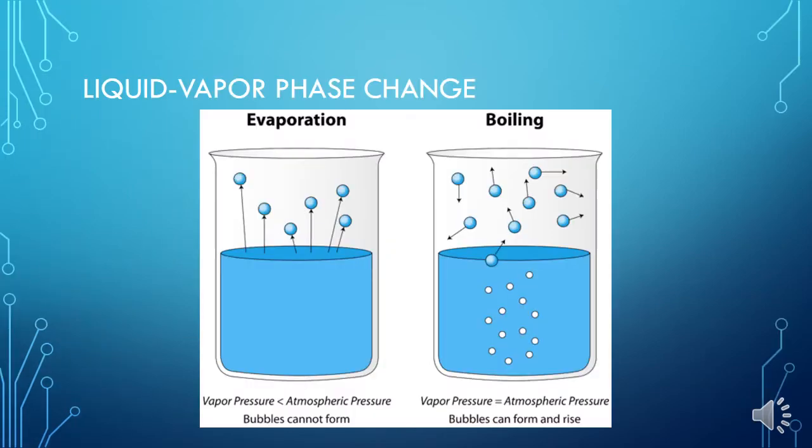Alright, so kicking off today, we're going to talk about liquid vapor phase changes first. So first up, we have our evaporation and boiling. Boiling point is the pressure at which the vapor pressure equals atmospheric pressure. When liquid boils, the molecules have developed enough kinetic energy that they can force themselves into the atmosphere against the opposing atmospheric pressure. Evaporation occurs when the molecules enter the atmosphere at temperature below its boiling point, so it doesn't require any extra heat.